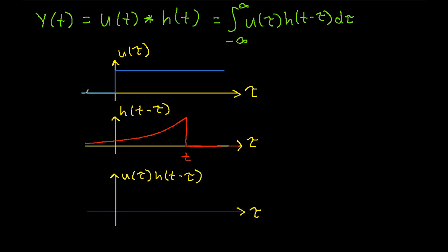As we did before, we draw out the signals and take their product, then work the integral. U of tau is very simple — it's just the unit step function. H of t minus tau is my decaying exponential, flipped about the point tau equals 0 so it now goes in the opposite direction, and then shifted to the right by t. We'll again assume for these pictures that t is greater than 0.